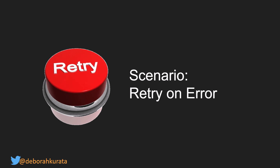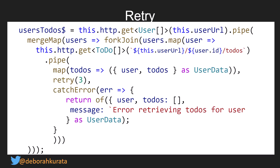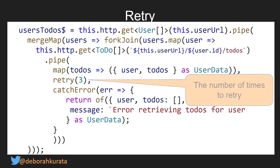Let's look at another scenario: retrying. Frequently I start ordering my Starbucks as I'm leaving the house, and about halfway down the street I lose connectivity — luckily the Starbucks app is smart enough to retry. To get our code to retry, we simply add the retry operator and specify how many times we want it to retry. Here, if an error occurs and it can't get the data, it will retry three times before falling into the catchError. But sometimes we want a fancier retry.